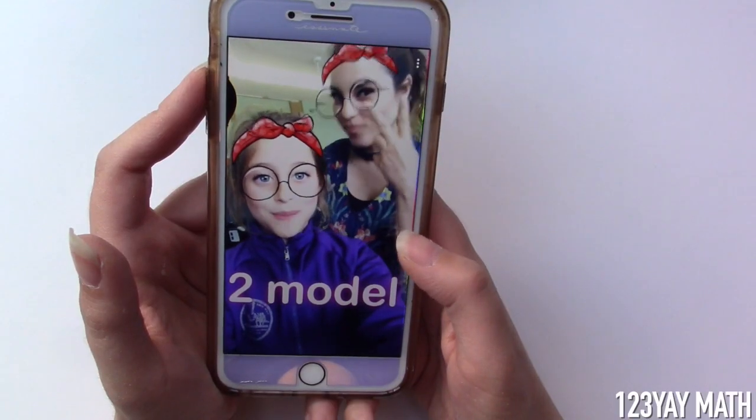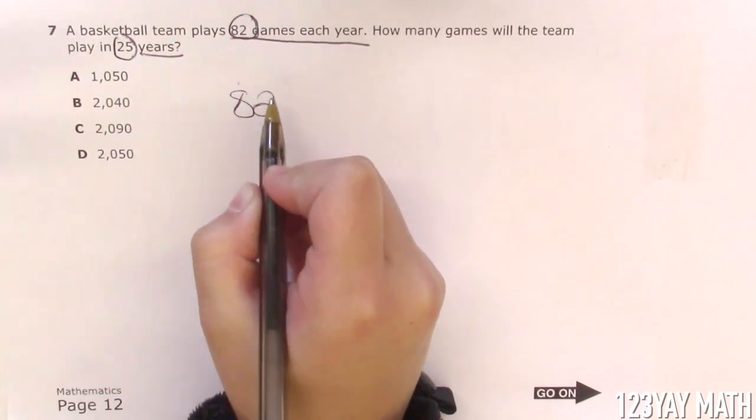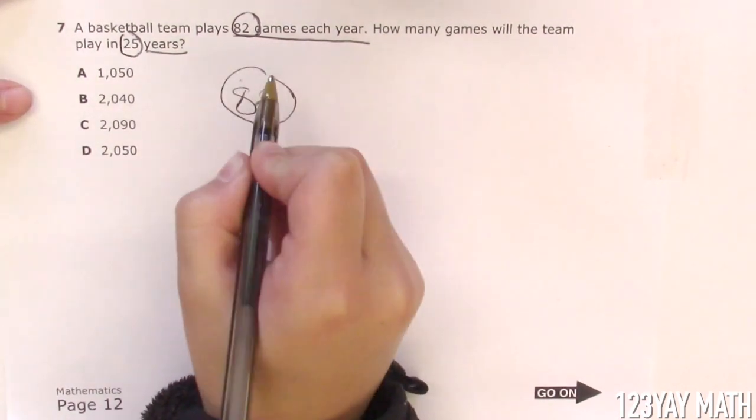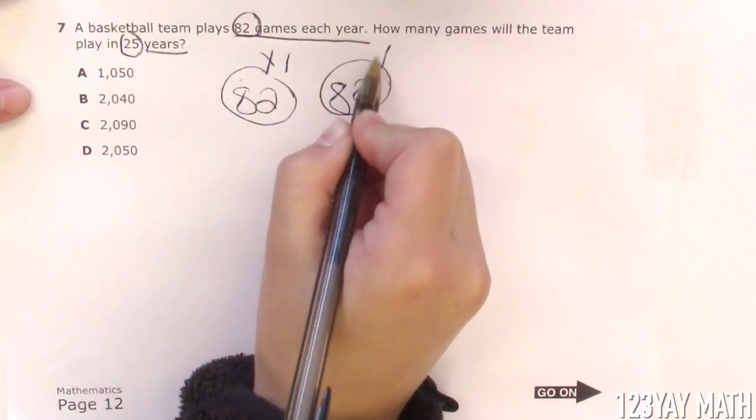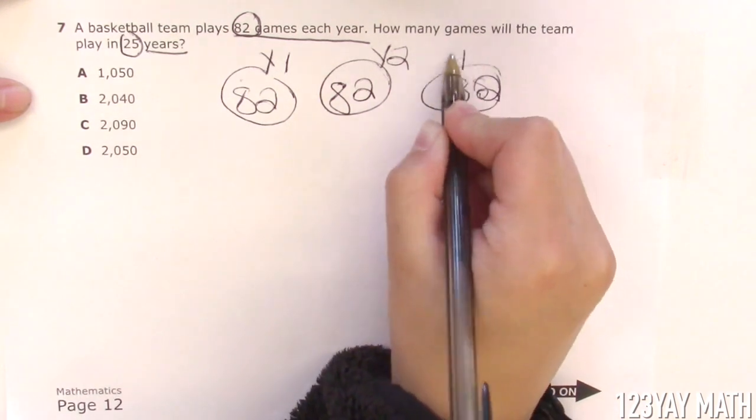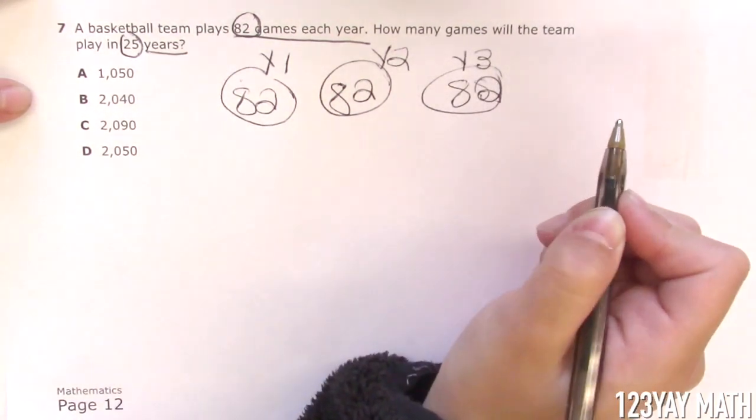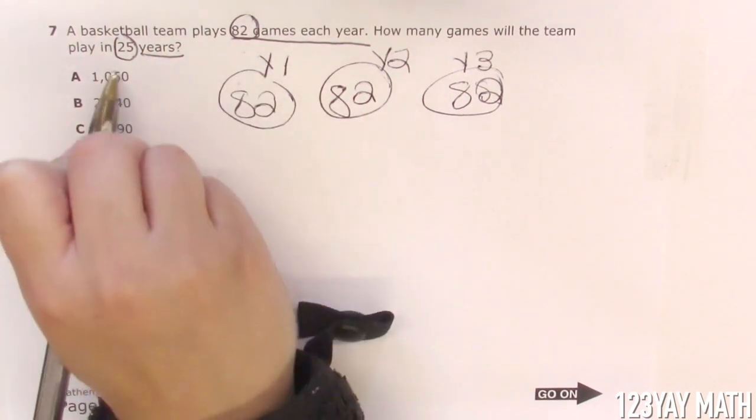Step 2, draw the model. 82, 25 times. 82 year 1, 82 year 2, and 82 year 3. Already, this is taking forever. So the faster way is to multiply 82 times 25.